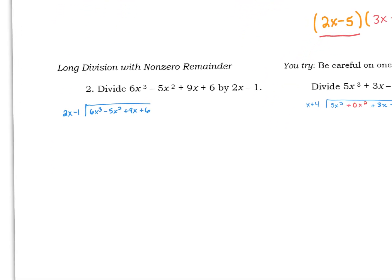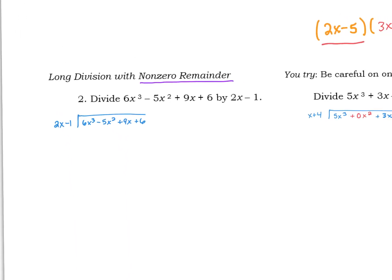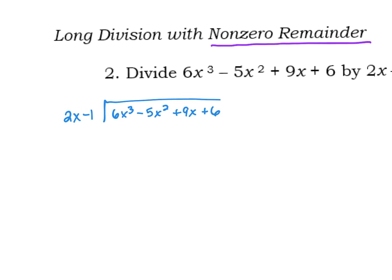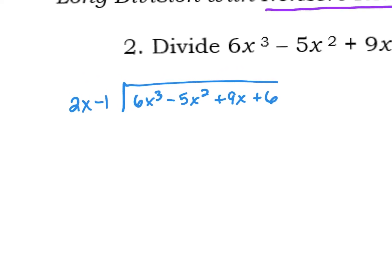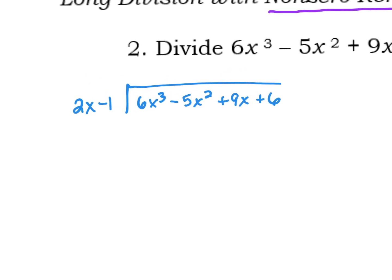On this next one, I'm giving you a hint: we're going to end up with a remainder here. We've got this long polynomial, and we're supposed to divide 2x minus 1 into it. I'm going to focus my attention initially on the first term of the expression I'm dividing by, and then figure out how I can divide into that particular term.